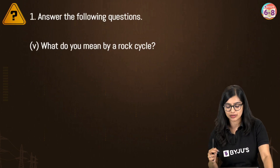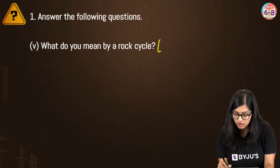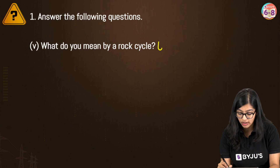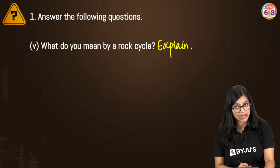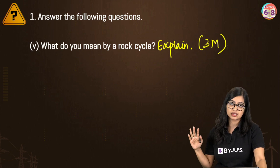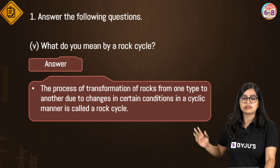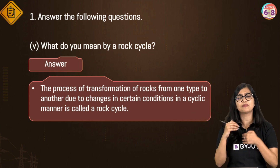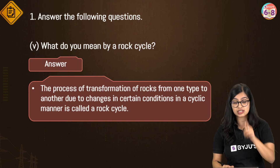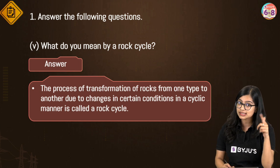The next important question is: what do you mean by a rock cycle? For one mark they just ask you to define it, but if the question says 'explain the rock cycle,' it can come for three, four, or five marks and you'll need to write accordingly. A rock cycle is the process of transformation of rocks from one type to another with respect to certain changes and conditions in a cyclic manner — which is why we call it a rock cycle, not a rock process.